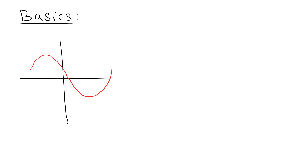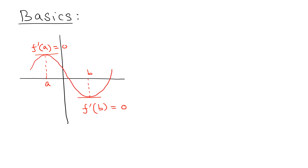Let's talk about some of the basics. When you have a nice smooth function, you learn in calculus that the local maximum or local minimum happens when the slope is zero. So at a maximum point a, f'(a) = 0, and at the minimum point b, f'(b) = 0. Don't just say f prime equals zero without specifying a value — that doesn't make sense. So at those maxima and minima, the derivative is zero, but that's not always the case.